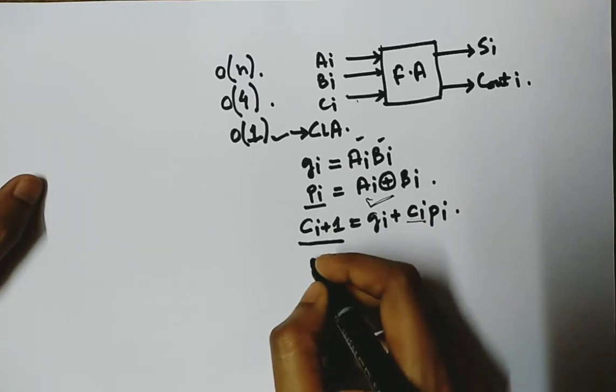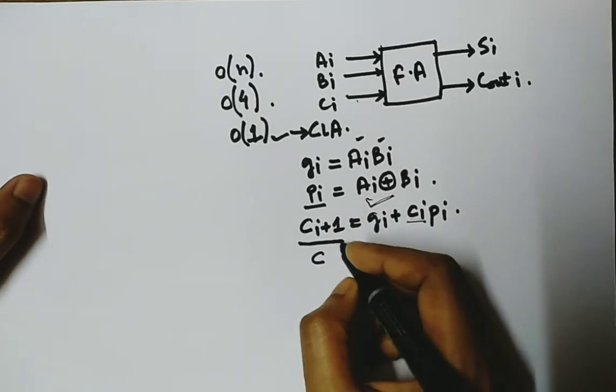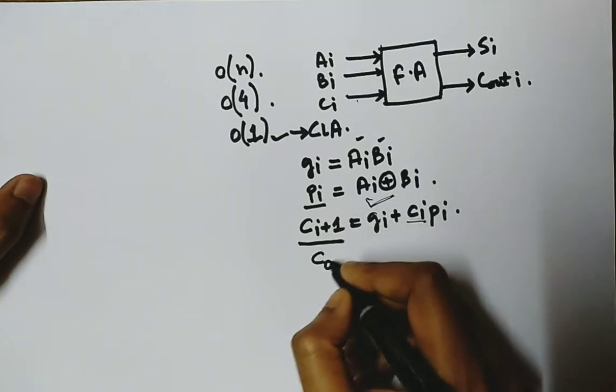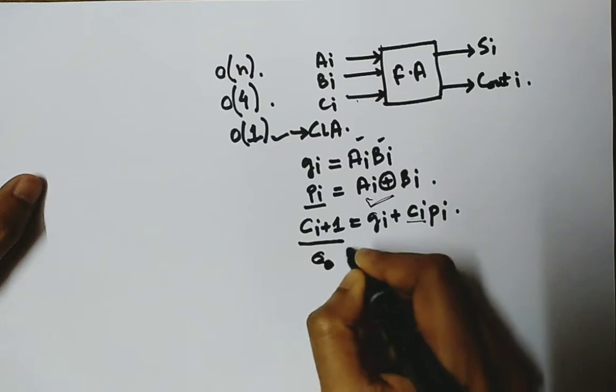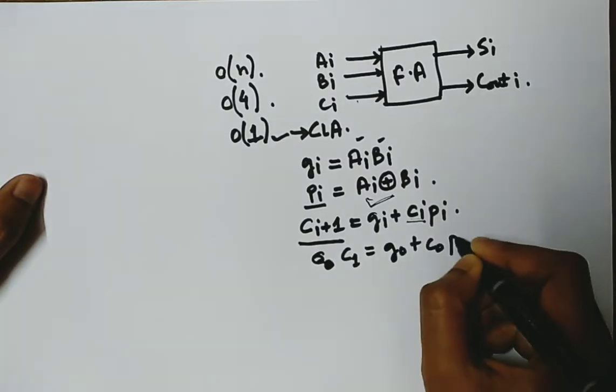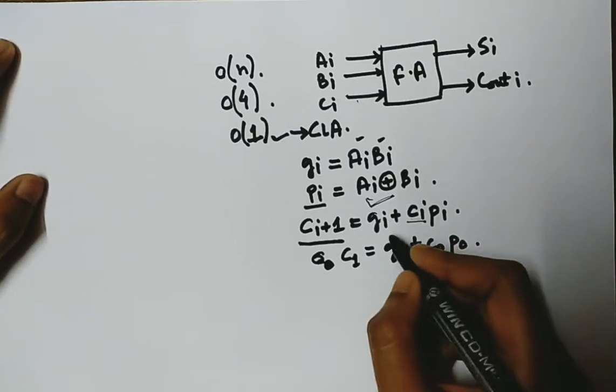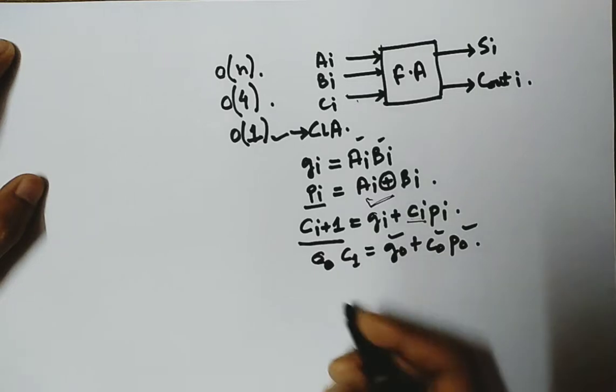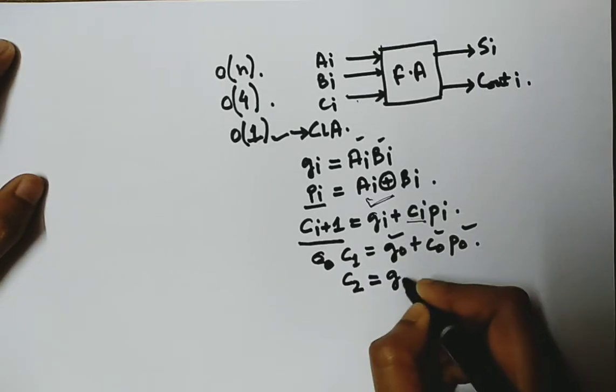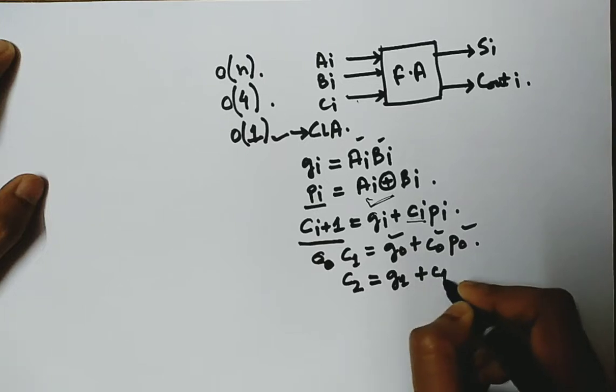Now if this is a four-bit carry look-ahead adder, then we can generate a recursive equation. In this form, we can get Ci equal to G0 plus C0 P0. We know all these, right? So we get C1. Then we get C2 equal to G1 plus C1 P1.